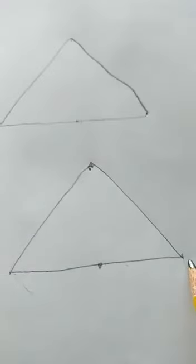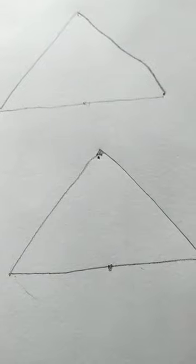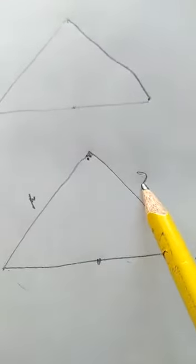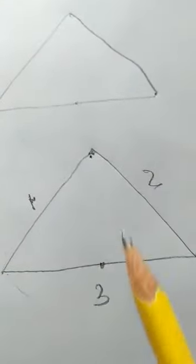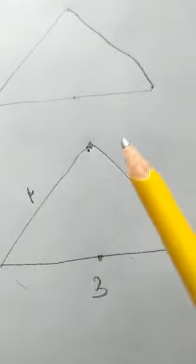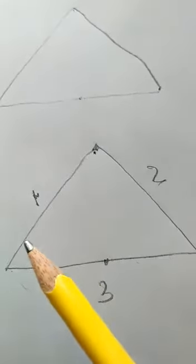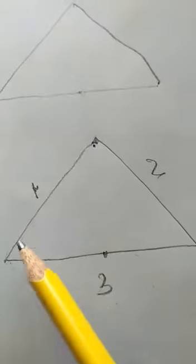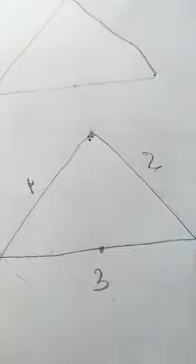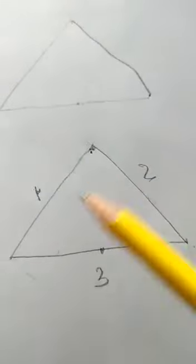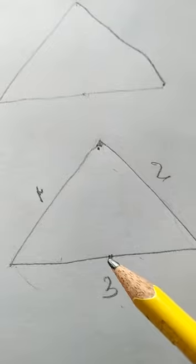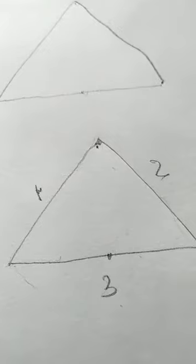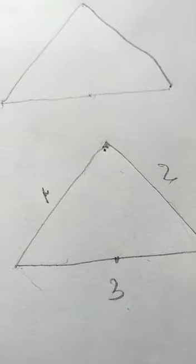This is triangle. Why we call this triangle? Because it has three sides: one, two, and three. Triangle, tri means one, two, three, and these are angles, so we call it triangle. You will not use any stencil, any scale, just freehand draw, just try to make freehand.